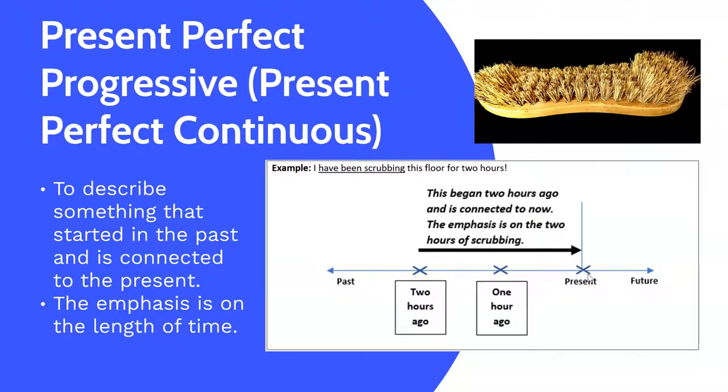In the previous example, the emphasis was on the end result, the fact that the person was a fan of rap music. With this example, the present perfect progressive tense shows that the emphasis is on the two hours of scrubbing.